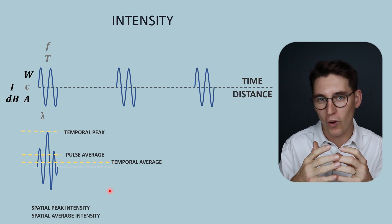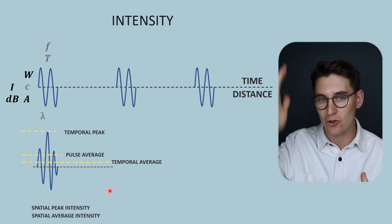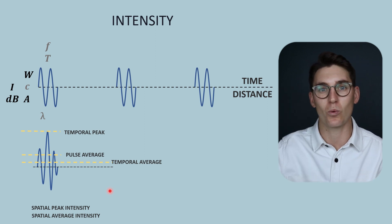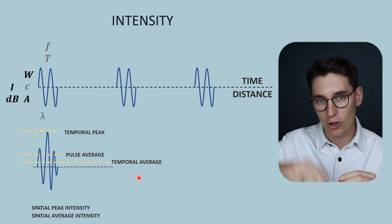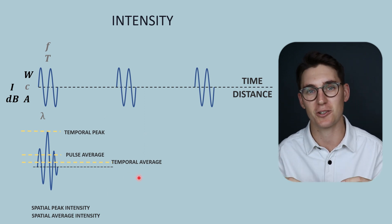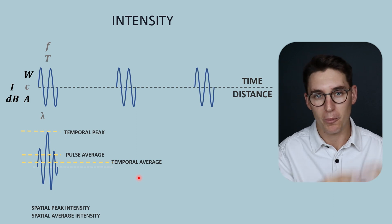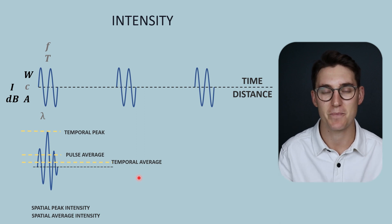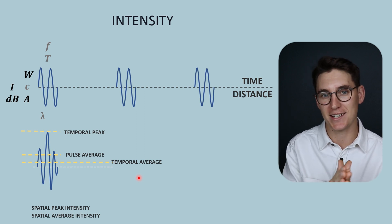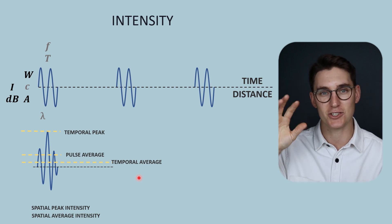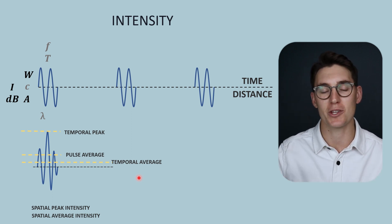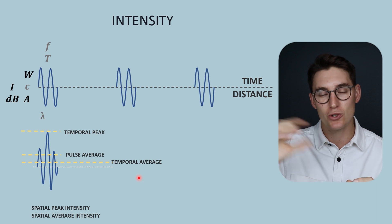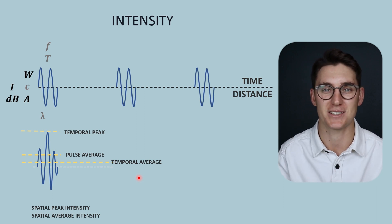So, intensity in an ultrasound beam can be assessed by a cross-sectional look for spatial intensities, or by examining the wave itself for temporal intensities. Local pressure changes within the ultrasound beam are exponentially proportional to power output and, as a result, also exponentially proportional to intensity. The decibel scale gives us relative intensity changes: a 10 dB change is a 10-fold change, and a 3 dB change is a 2-fold change — either a halving or a doubling of intensity.